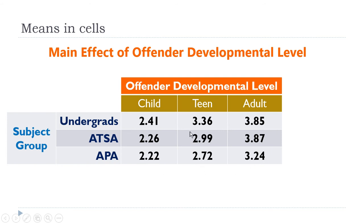Looking at these numbers, adults are getting more accountability than teens and children. Undergrads have a mix of twos and threes, ATSA has two twos and a three, and APA has two twos and a three. The APA people are a little less likely to hold offenders accountable, and undergrads are more likely.